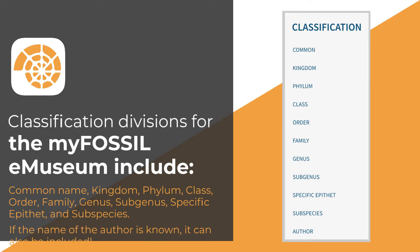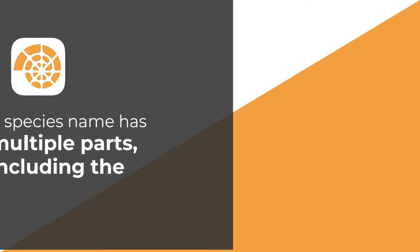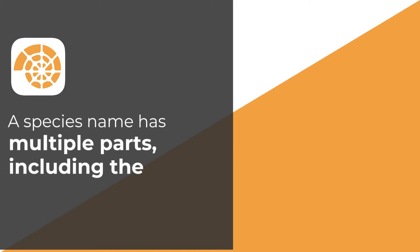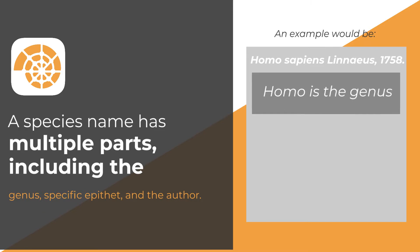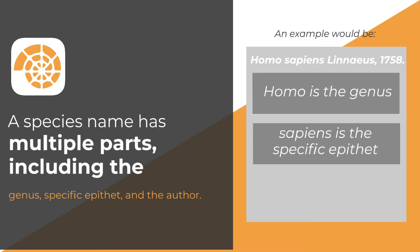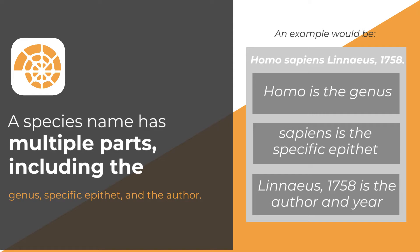A species name has multiple parts including the genus, specific epithet, and the author. An example would be Homo sapiens Linnaeus 1758, where Homo is the genus, sapiens is the specific epithet, and Linnaeus 1758 is the author and year.